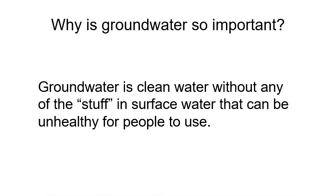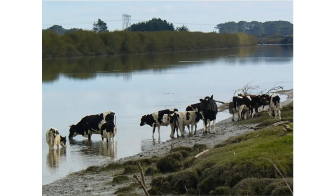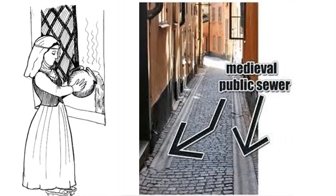Why are we spending so much time on groundwater? Groundwater is clean water without any of the stuff found in lakes, rivers, and streams that can be unhealthy. Think about this river — you wouldn't want to drink straight from it because animals are going into it. In medieval times, people got sick because raw sewage was dumped into streets, and when it rained, runoff carried the sewage into the rivers. People got their drinking water from those rivers, which meant they were drinking bacteria and viruses that made them sick.